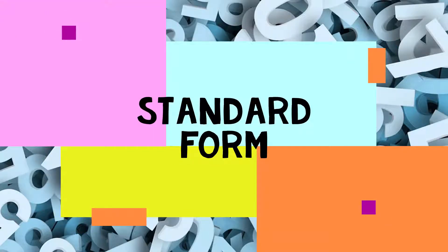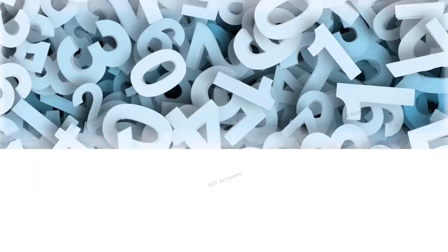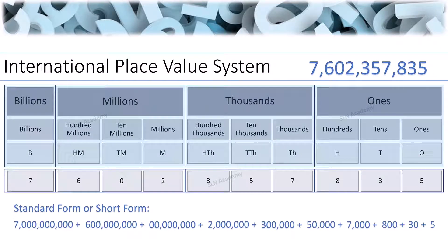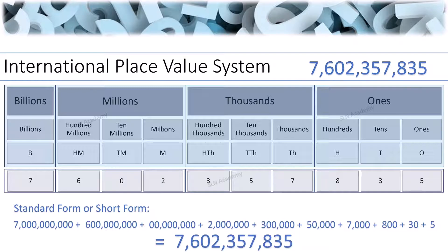Standard Form or Short Form. When a number is written in figures, it is known as the standard form of a number, also referred to as the short form. So 7,602,357,835 is the standard form of this number.